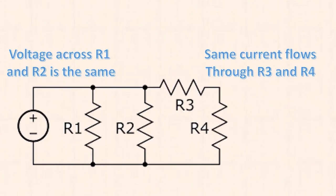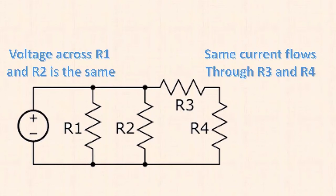Finally, we have the series-parallel circuit, which is a combination of both. Most useful circuits you'll work with will be of this type. The same concepts we already discussed apply: voltage stays the same in parts of the circuit that are parallel to each other, and the same current flows through the parts that are in series. So we now have some basic knowledge of voltage, current, resistance, and the three types of circuits.